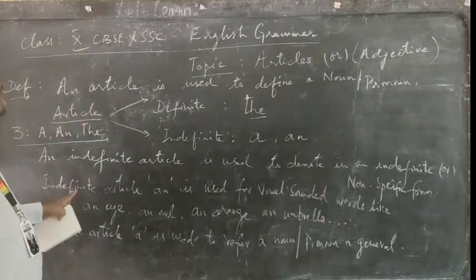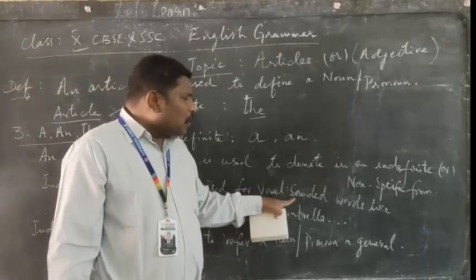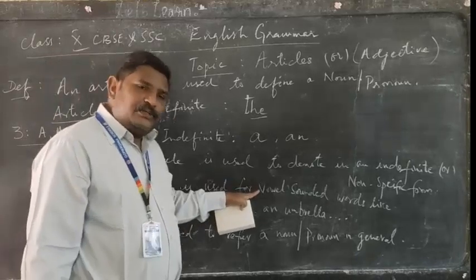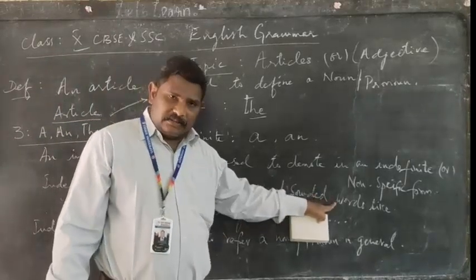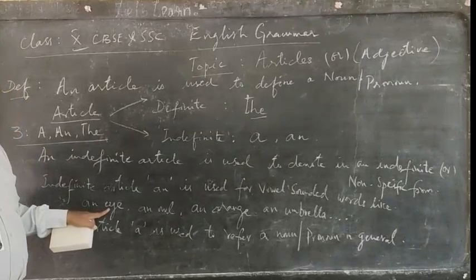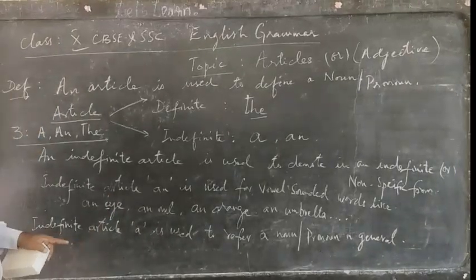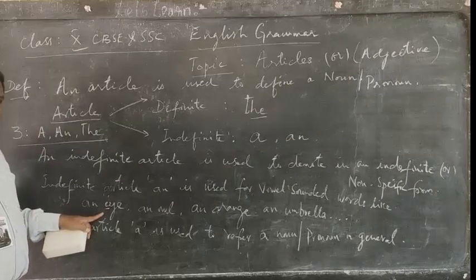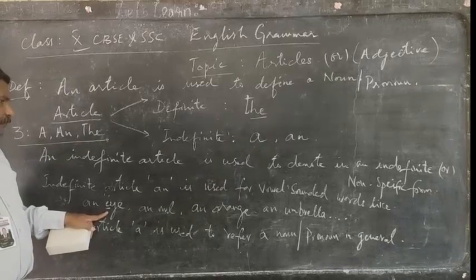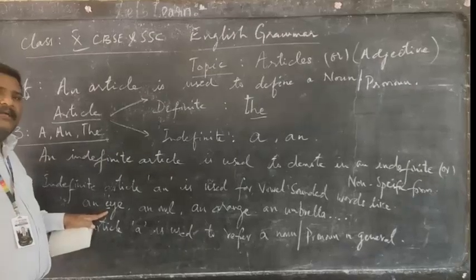AN is used mostly to refer to vowel-sounded words. Here are some examples. If you look at the word 'I' — the letter is E, but the pronunciation of E starts as 'I'. AN eye is vowel-sounded. We have five vowels in English: A, E, I, O, U. These letters have their specific sounds. Sound in grammar is called a syllable.